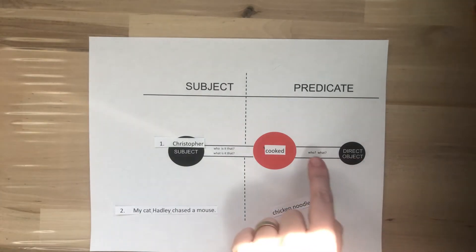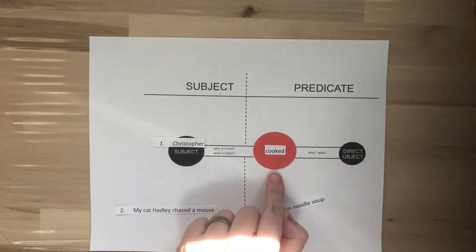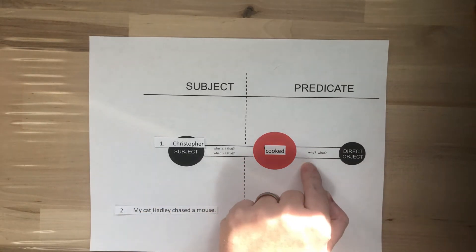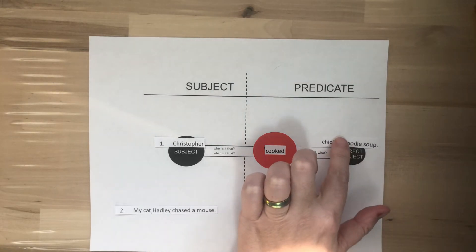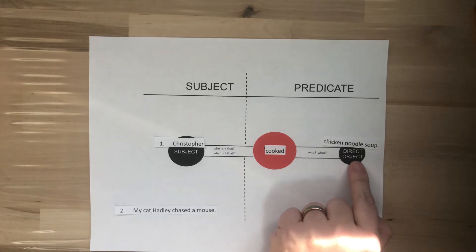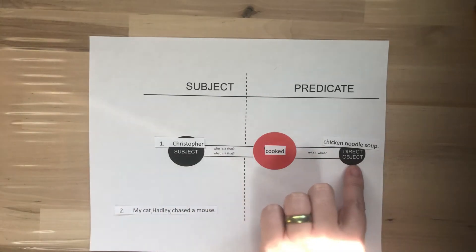Now, our direct object is who or what was cooked. We know Christopher cooked. Who or what did Christopher cook? We hope it's not a who. But in this case, we know he cooked chicken noodle soup. That is our direct object. So, Christopher cooked chicken noodle soup.